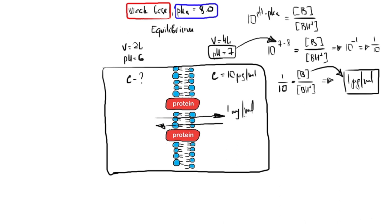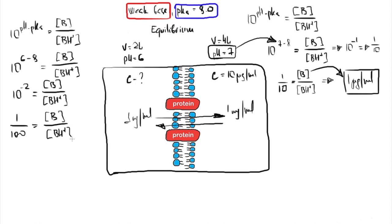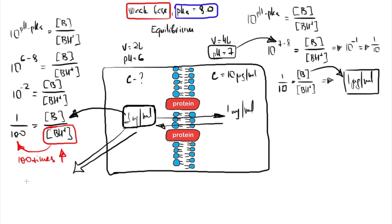This 1 mg/mL is the concentration of the lipid-soluble fraction in the left compartment, but not the total concentration. For the left compartment at pH 6: 10^(6 − 8) = 10^(−2) = 1/100, so the protonated (water-soluble) form is 100 times higher than the unprotonated form. The lipid-soluble fraction is 1 mg/mL, and the water-soluble form is 100 times higher, so the total drug concentration in the left compartment is approximately 100 mg/mL.